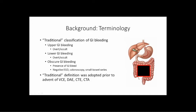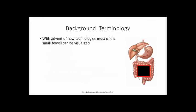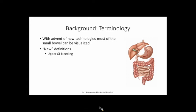That traditional definition was developed before the advent of all the new technologies we now have for looking at the small bowel, including capsule devices, device-assisted enteroscopy, CT enterography, and CT angiography. With the advent of these new technologies, some of this terminology may be changing. This was proposed in a review article in 2015, where the black box disappears and we can define things a bit more concretely.